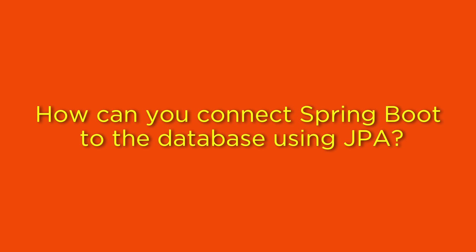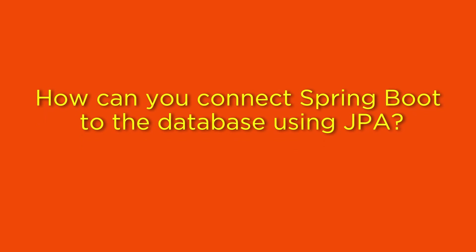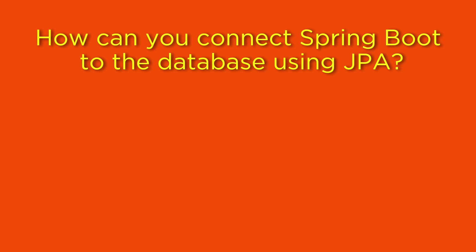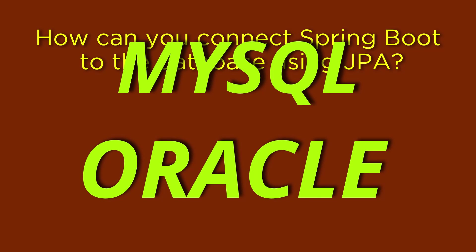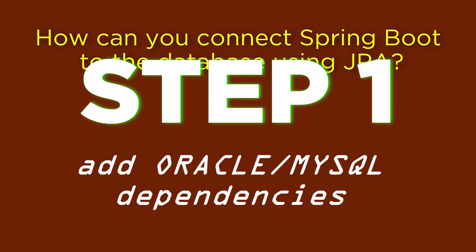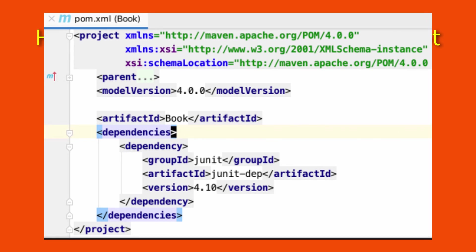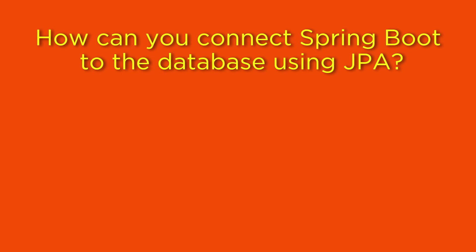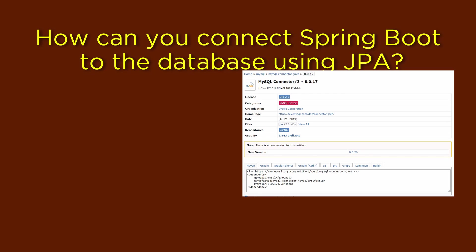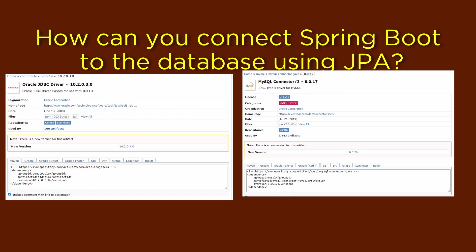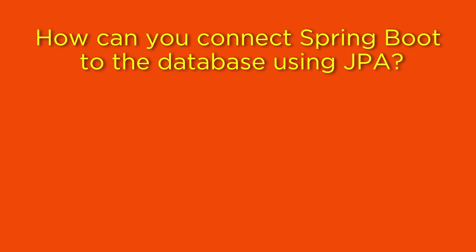How can you connect Spring Boot to the database using JPA? Connecting Spring Boot with databases like MySQL and Oracle is very easy. The first step is you need to add some dependencies for your database into the pom.xml. These dependencies will be database-specific — for MySQL you need to add certain dependencies, for Oracle you need to add some other dependencies. It depends on which type of database you want to connect.